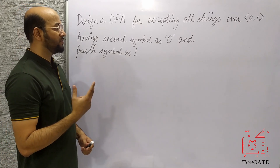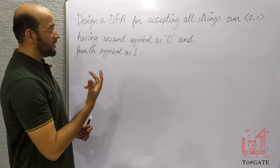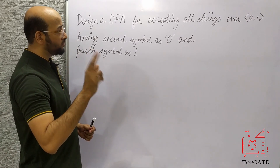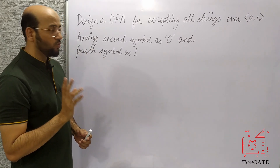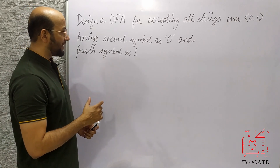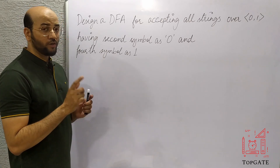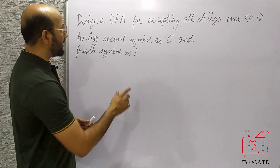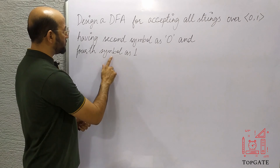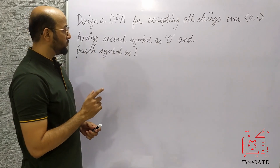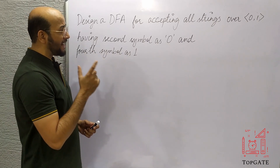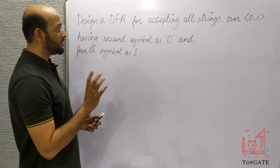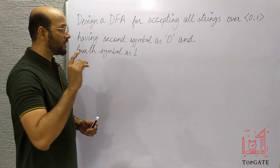We have two conditions in this one. The first condition is the second symbol of the string should be 0, and the fourth symbol of the string should be 1. So, let us understand what kind of language this is. Since the second symbol should be 0 and the fourth symbol should be 1, there will be at least 4 alphabets in the string. The minimum length of the string will be 4 in any case.